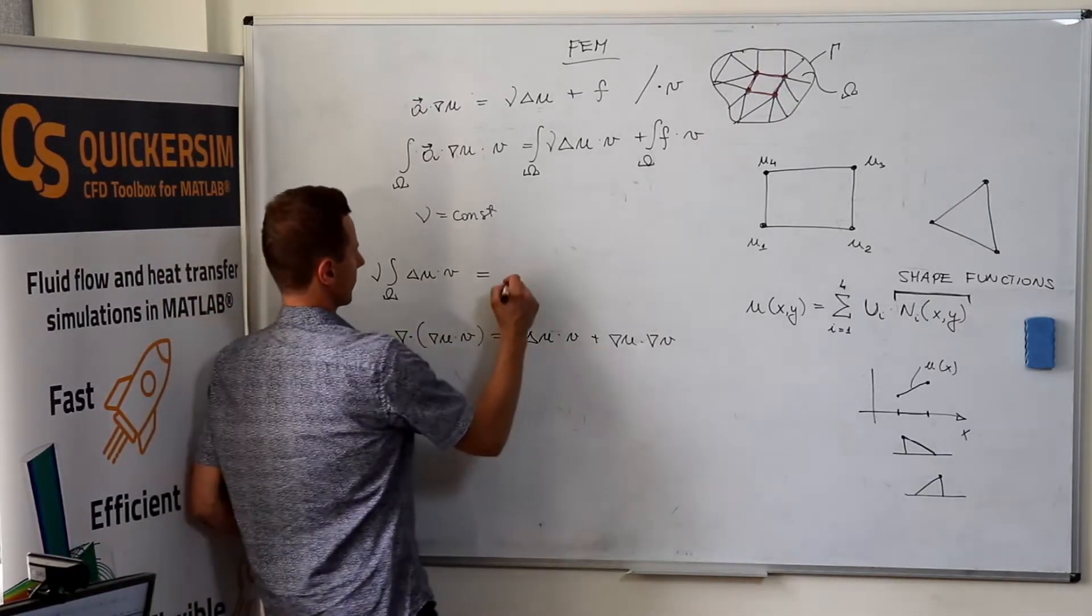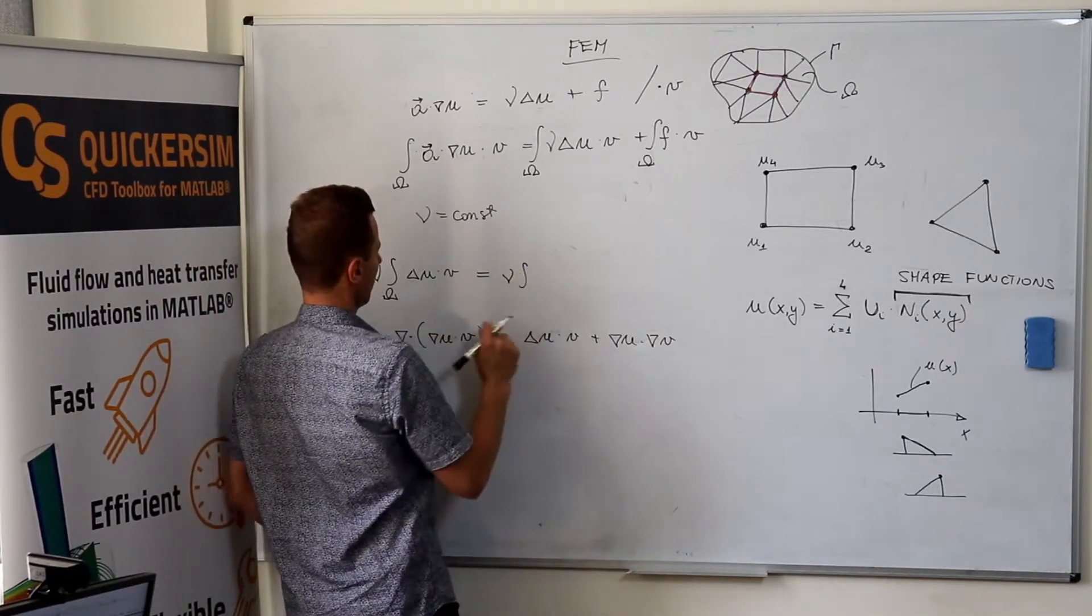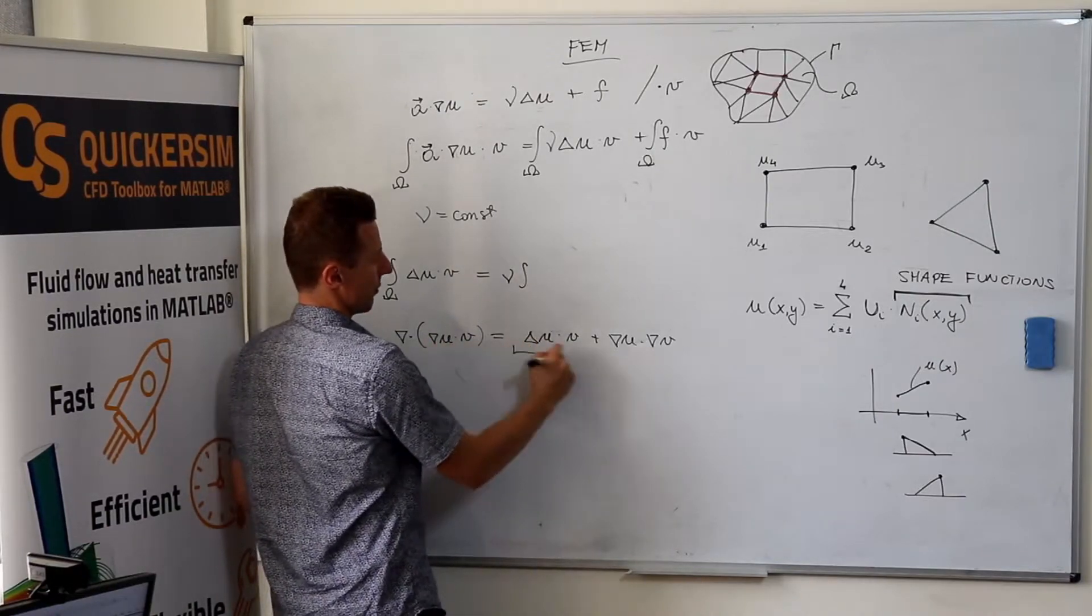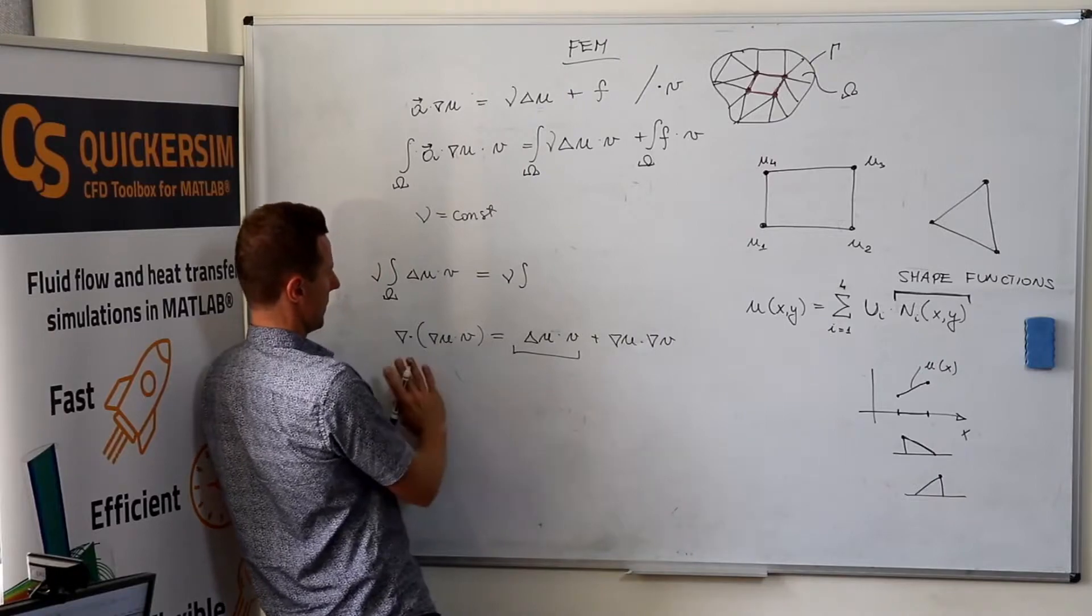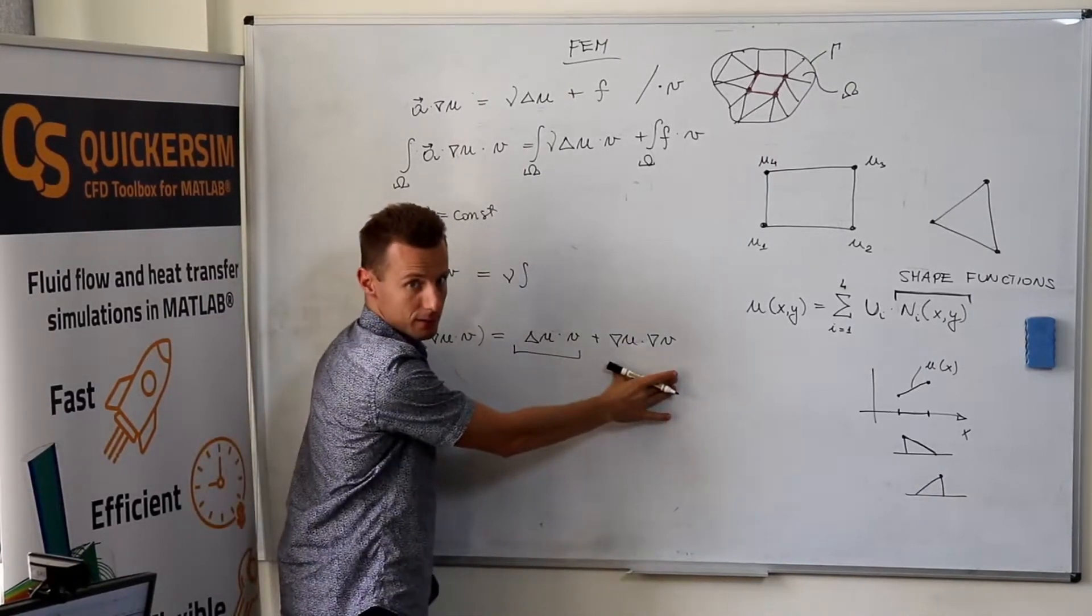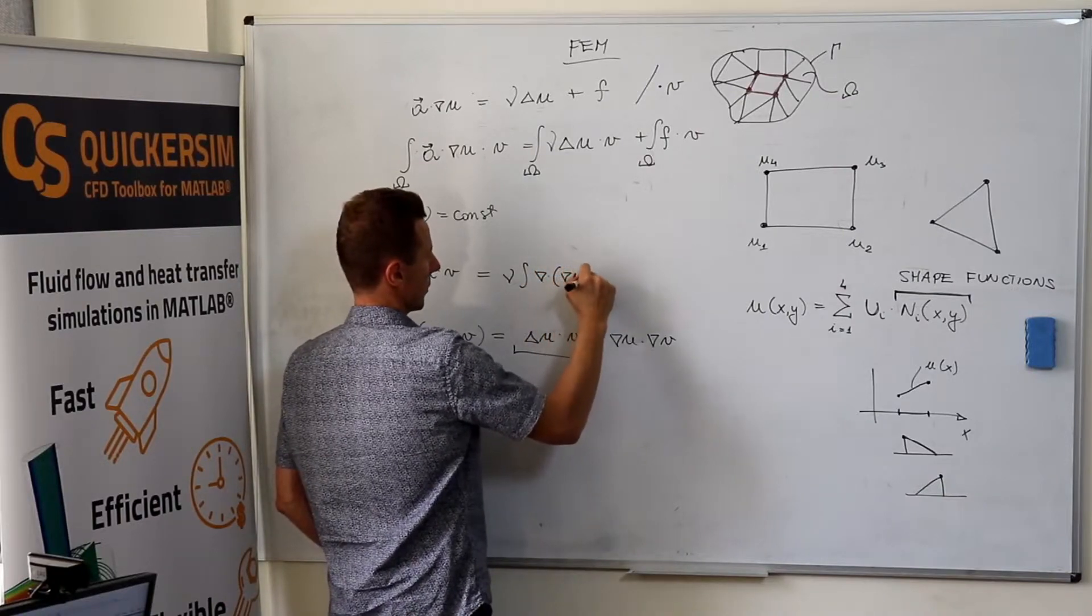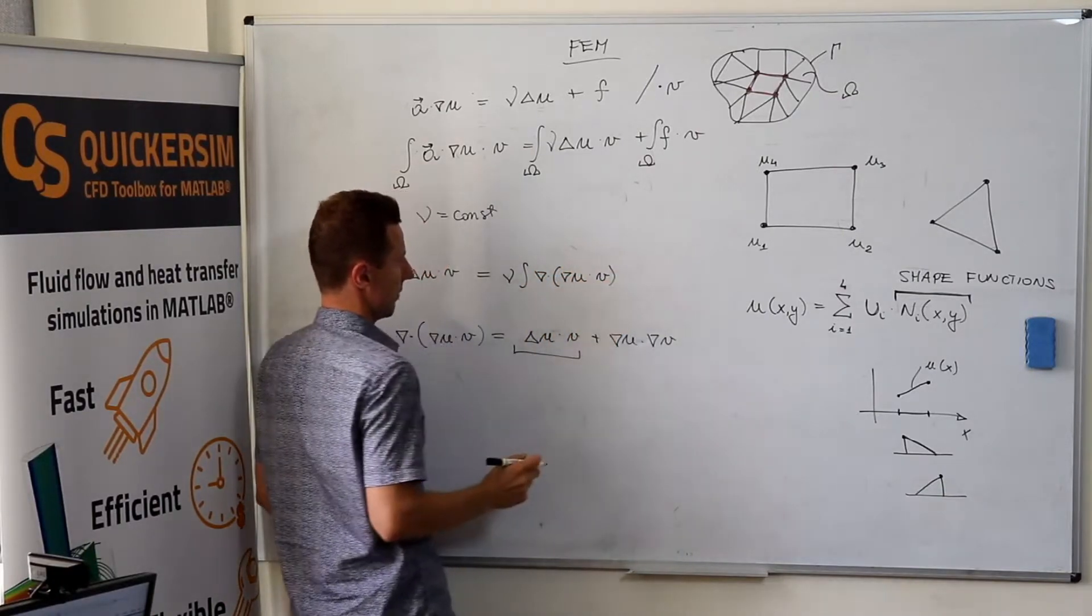So we've got ni. And we can write, we want to have this, so this will be that minus that. So divergence of gradient of u times v